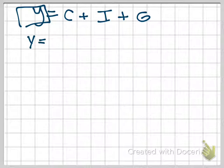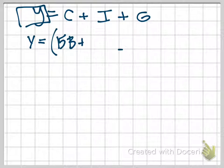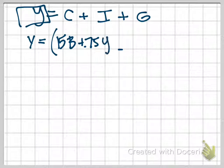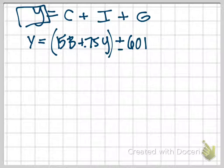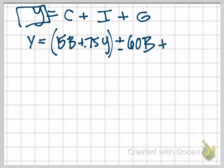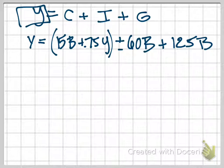I'm using the equation Y equals C plus I plus G to ultimately solve for real GDP. So substituting in, we have Y equals, so we have the C that we just worked out. Y equals $15 billion plus 0.75Y, and then I, we were told that I was $60 billion, and that G was $125 billion.